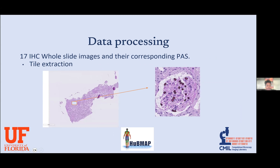For data processing, I had 17 IHC whole slide images and their corresponding PAS-stained images, totaling 34 whole slide images. These are really huge images, around 200 megabytes per image. Because they're so large, it's hard to process the whole image at once, so we work on extracting small tiles — cropping the regions we're interested in into smaller PNG or JPEG images.